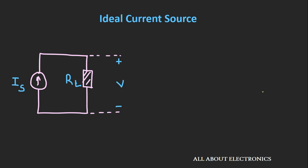The voltage that appears across this current source depends upon the load. Let's assume that the load here is a resistive load. If we connect a load resistance RL to the ideal current source IS, then the voltage that appears across this current source can be given as V = IS × RL. As the value of this resistance RL increases, the amount of voltage that appears across this current source will increase.